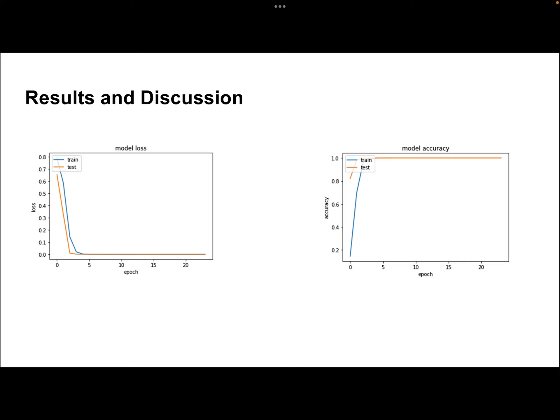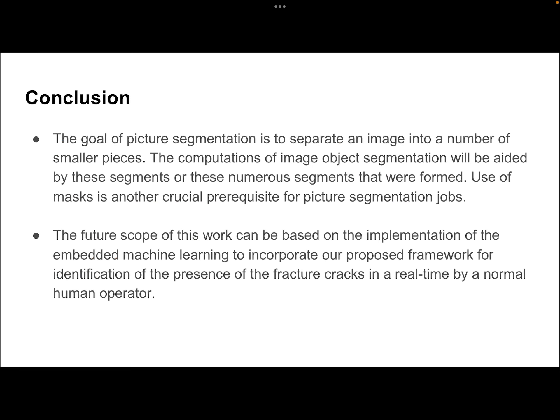This accuracy versus epoch figure shows the accuracy of prediction of fracture cracks present in the microstructure images. It is observed that the U-Net architecture achieves an accuracy score of 1.0, which is highly efficient for the characterization of fracture surfaces.